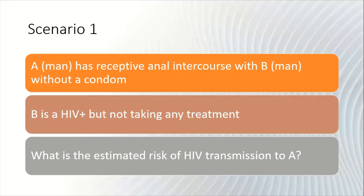Scenario 1. A is a man who has had receptive anal intercourse with B, who is a man, without a condom. B is HIV positive and he is not taking any treatment for his HIV. Using the tables provided in the BASH guidelines and the risk of transmission equation from the last webinar episode, calculate the estimated risk of HIV transmission from B to A. Pause the video now to perform your calculation and we'll go over the answers in the next slide.